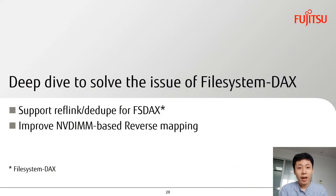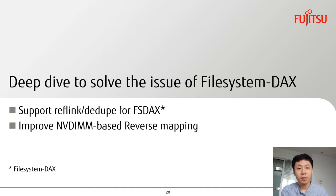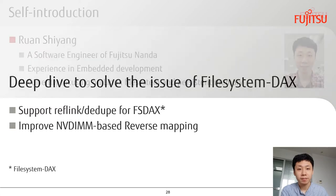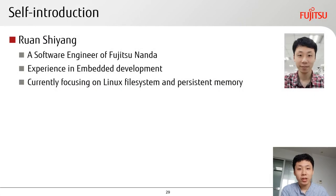Hi everyone, I'm going to show you how we deep dive to solve the issues of file system DAX. I will cover two parts: first, how to support Reflink and Dedupe for FSDAX; second, how to improve NVDIMM-based reverse mapping. My name is Ran Shiyang. I'm a software engineer at Fujitsu NDA. I used to work in embedded development and am currently focusing on the Linux file system and persistent memory.